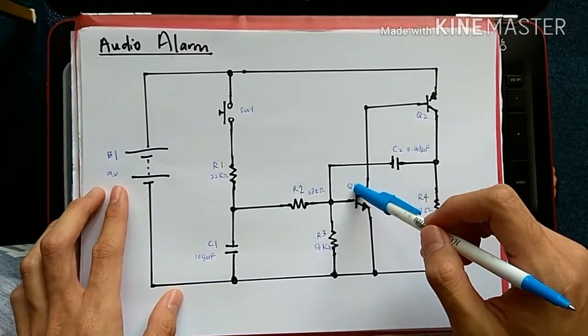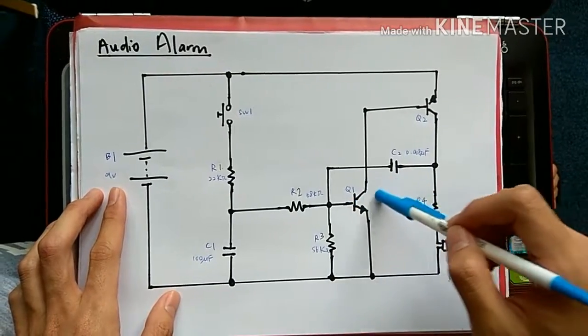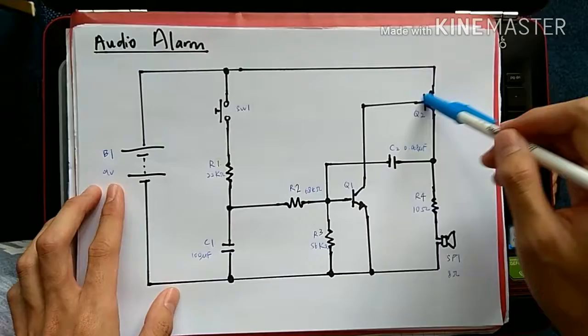it will make Q1 have low voltage at pin B. So Q1 will stop working, and eventually it will make Q2 stop working.